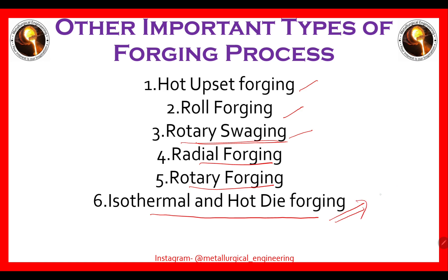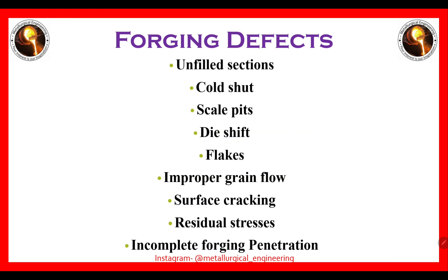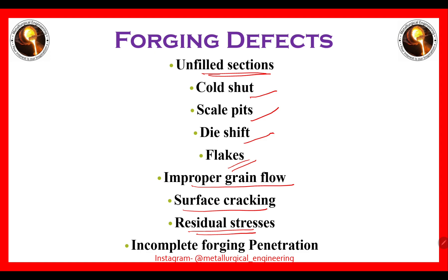Isothermal or hot die forging occurs when the temperature is greater than the recrystallization temperature. The defects related to the forging process include: unfilled sections, cold shut, scale pits, die shift, flakes, improper grain flow, surface cracking, residual stresses, and incomplete forging penetration. These are the most common defects occurring during forging.